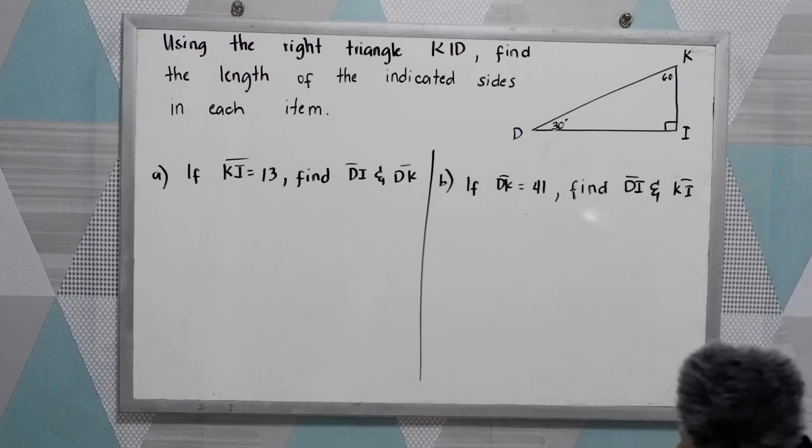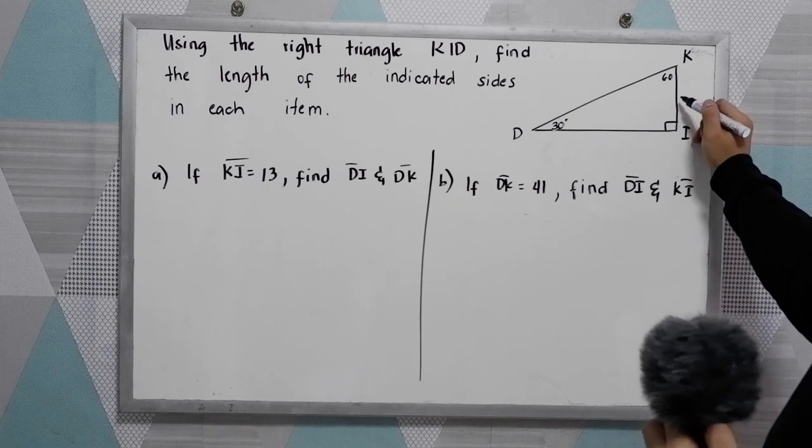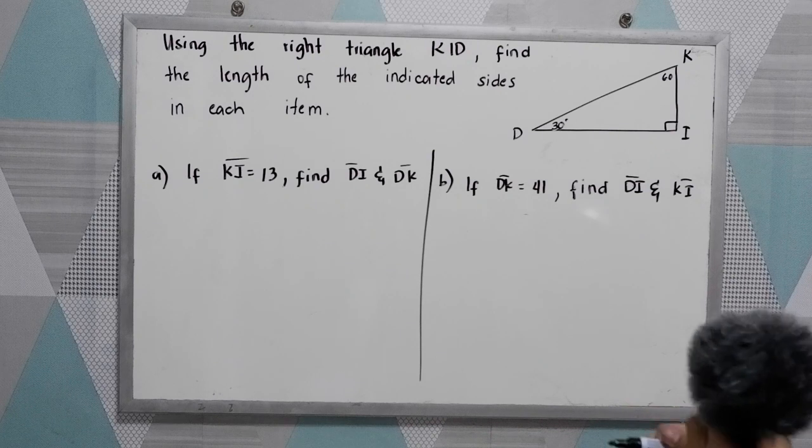So you study our triangle, this is our 30 degrees. Therefore, this is our shorter leg and the longer leg and our hypotenuse.